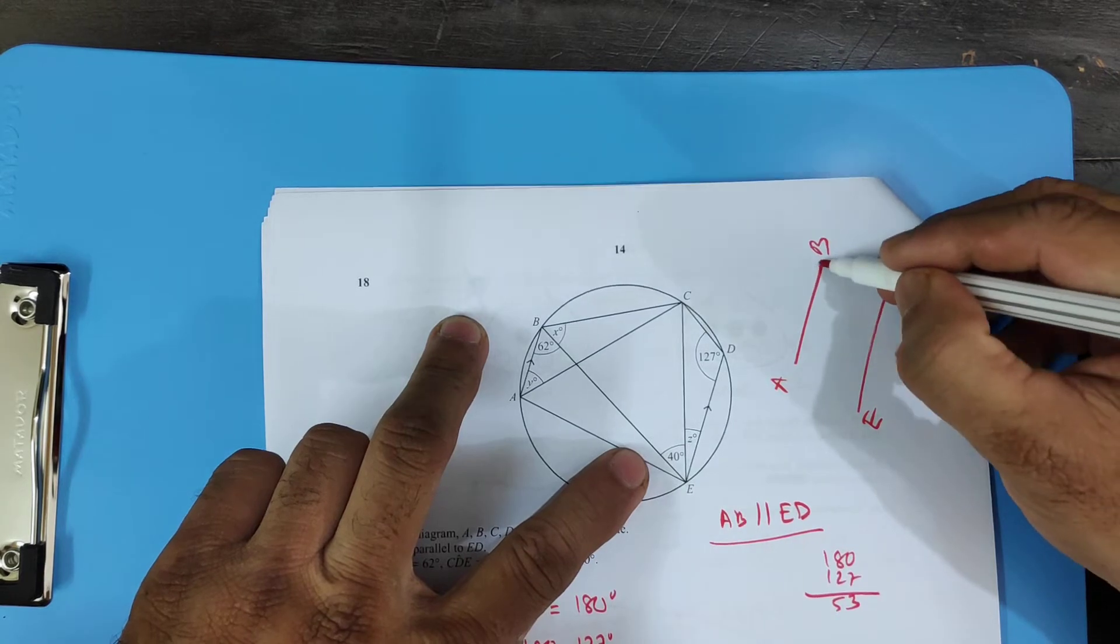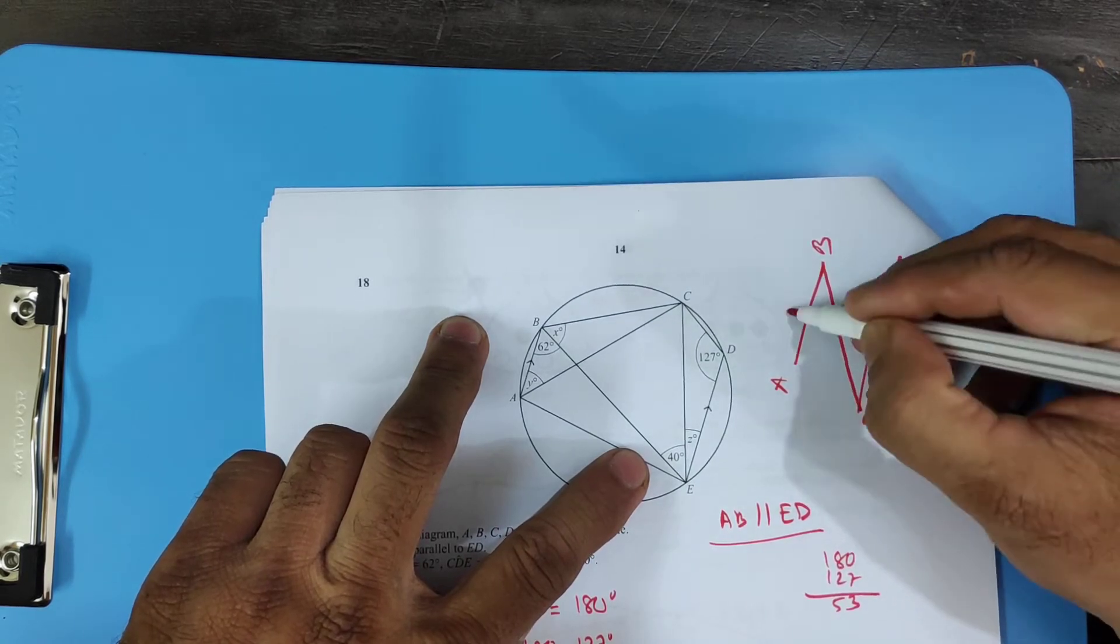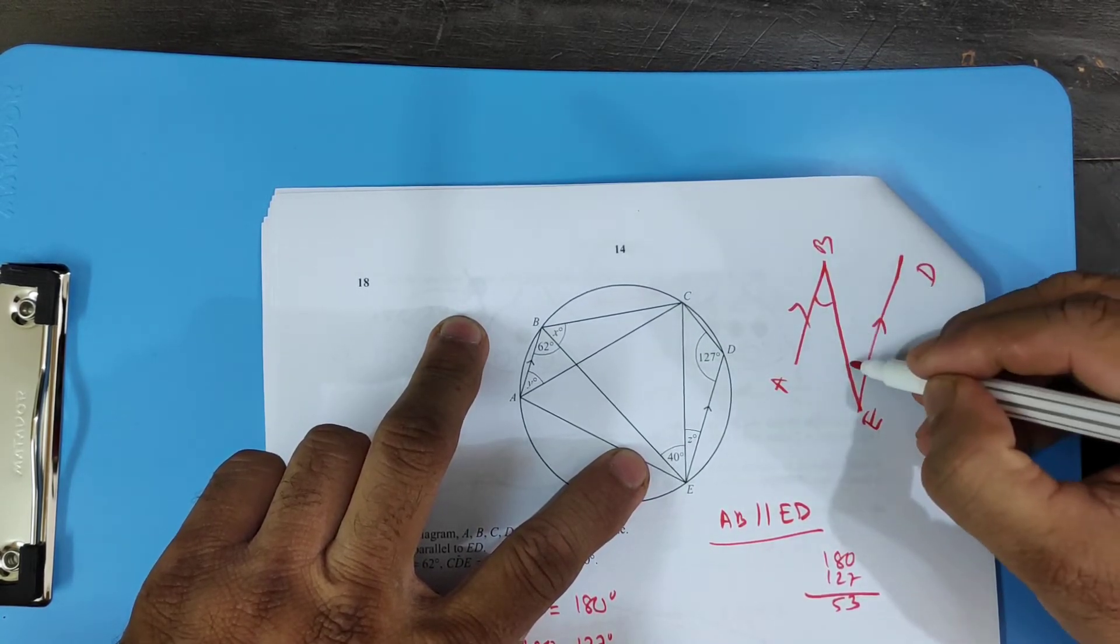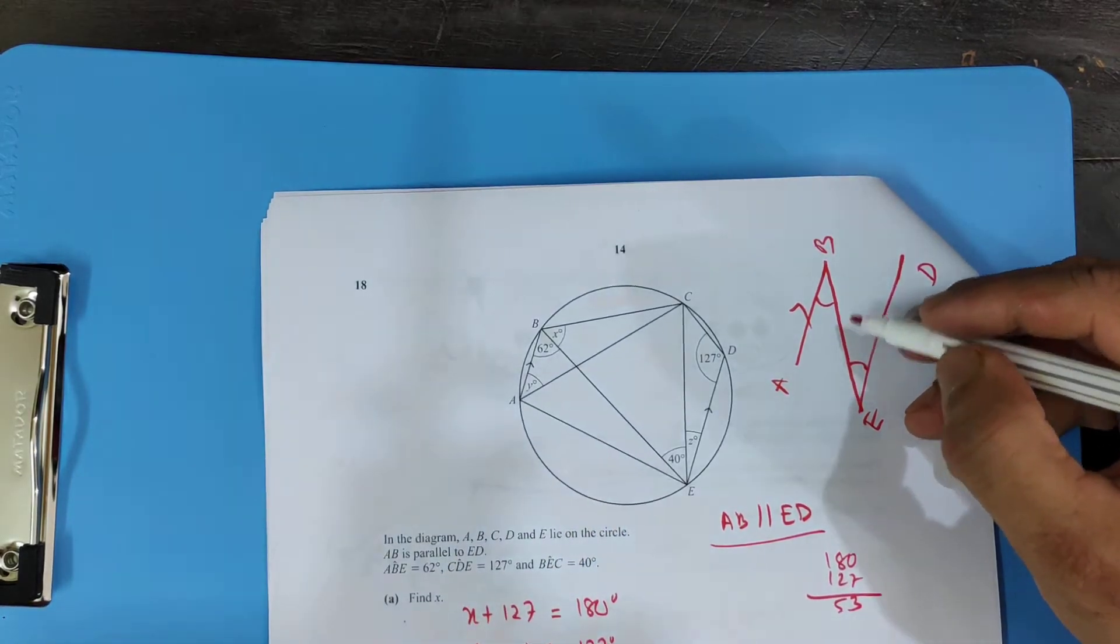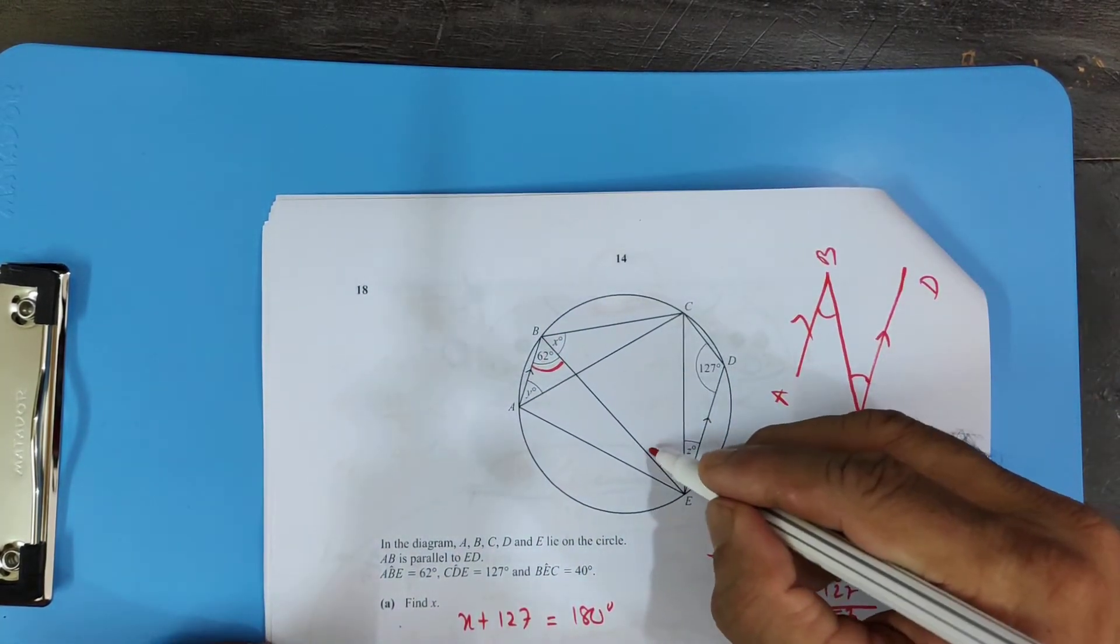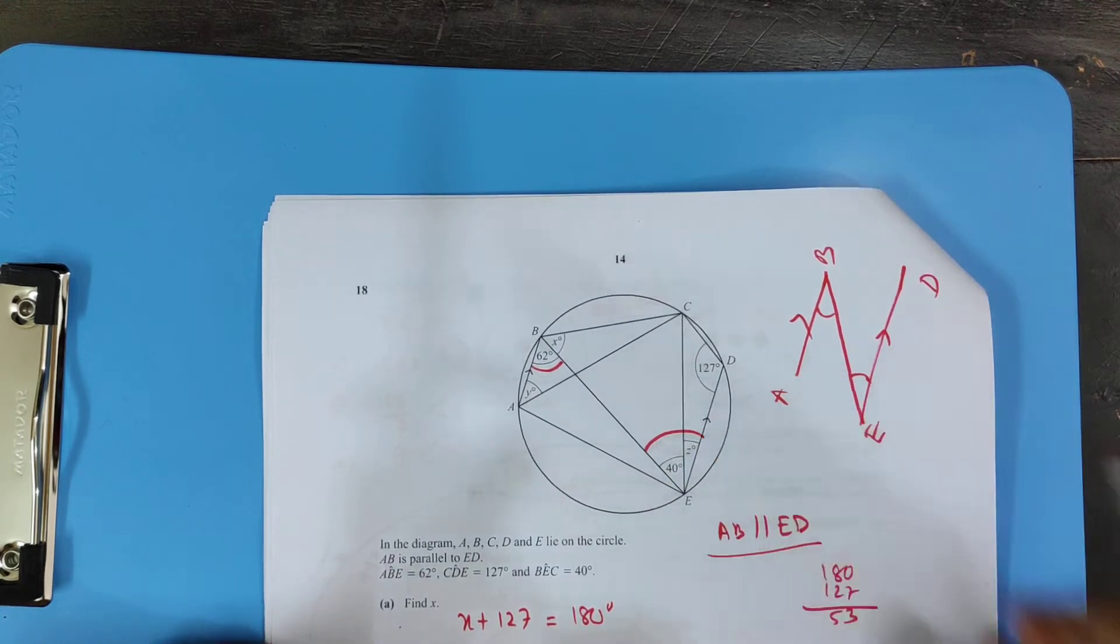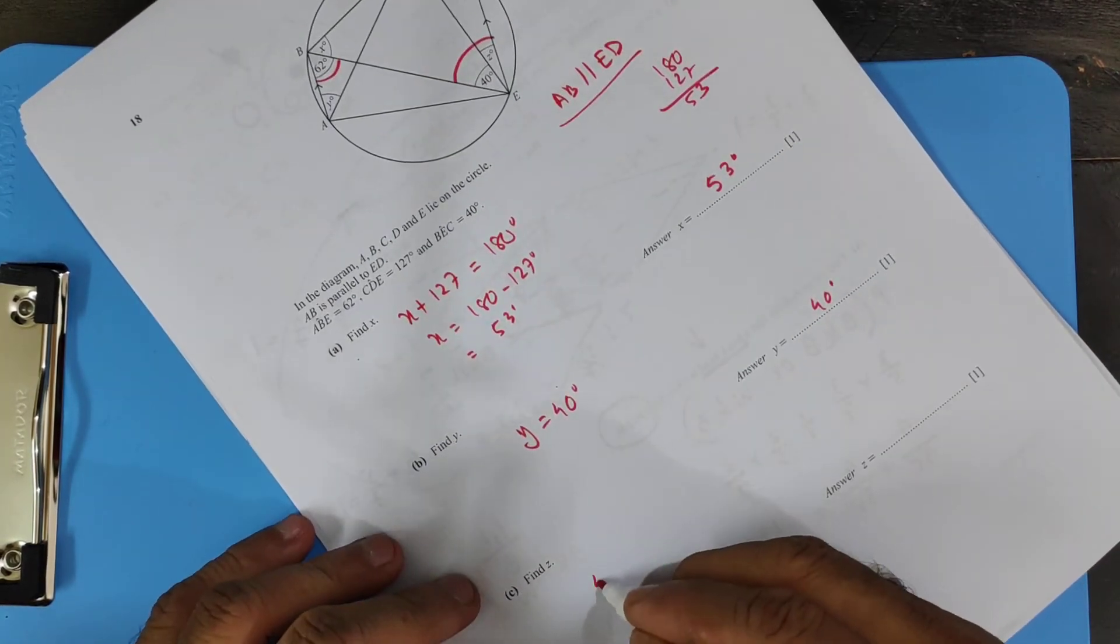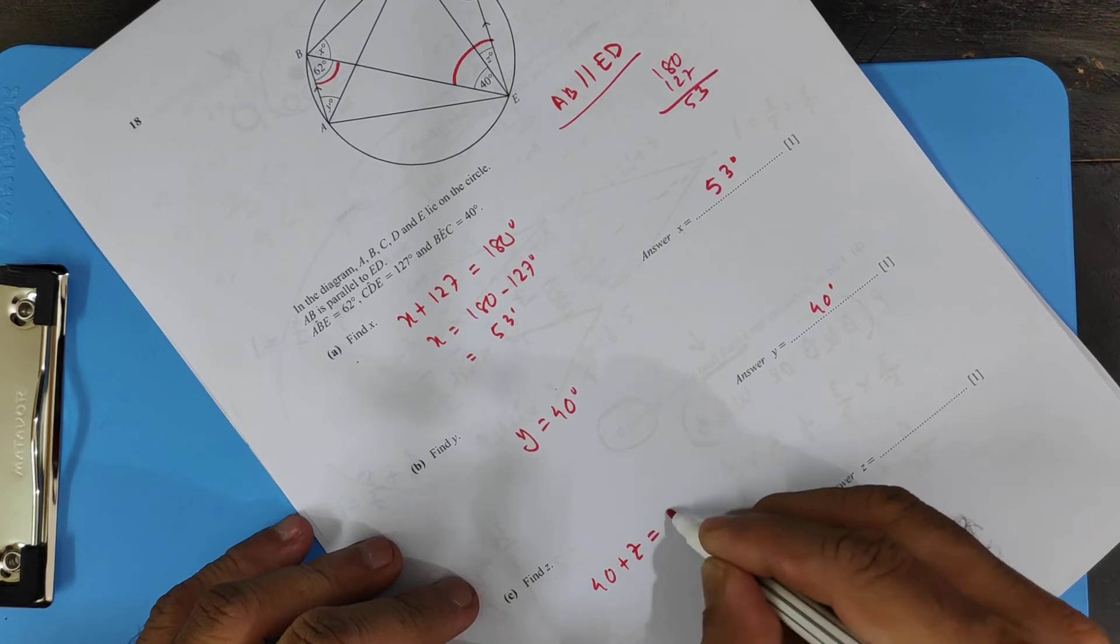So this angle and this angle, they are alternate angles and they are equal. So this 62 equals to this angle. So what can I write down? 40 plus z equals 62.